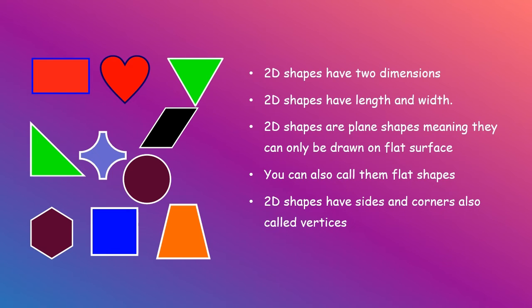Plane shapes can only be drawn on flat surfaces. As a result, you can also call them flat shapes. Finally, 2D shapes have sides and corners as their properties. The corners are usually referred to as vertices. Vertex for singular. Great. Hope you are learning something.